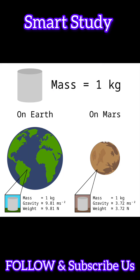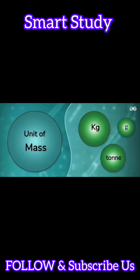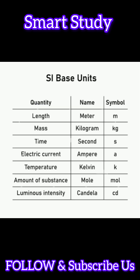Mass: The SI unit of mass is the kilogram (kg). Other common units include grams (g) and milligrams (mg). Tools for measuring mass include balances and scales. Mass is a measure of the amount of matter in an object.